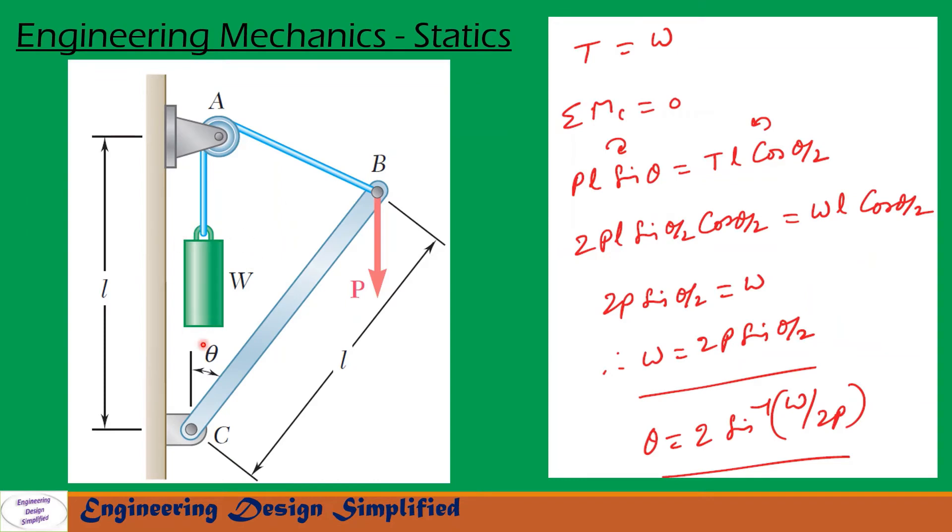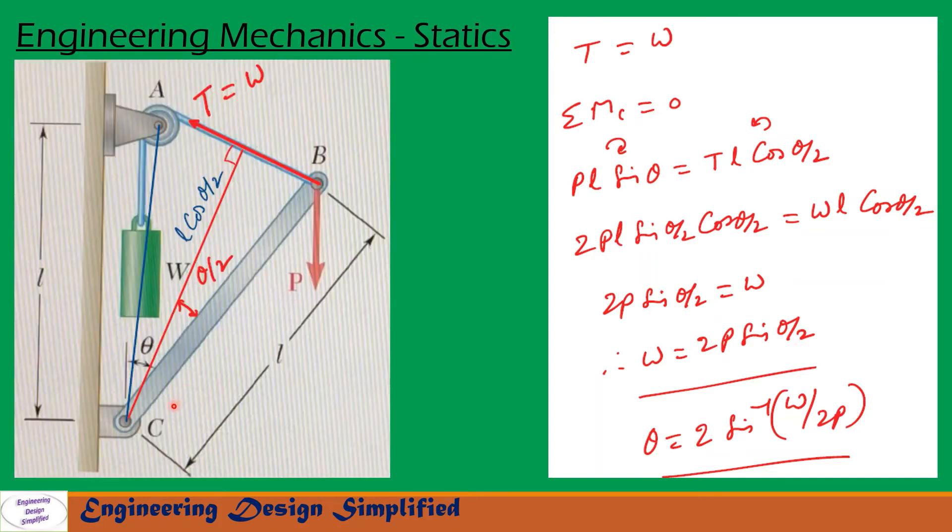Since a counterweight W is attached here, the tension in this side of the string AB will also be equal to the weight W. So T equals W. So on this bar BC there is a load P acting vertically downwards here, and there is a tension in the string acting towards this direction. So T equals W.